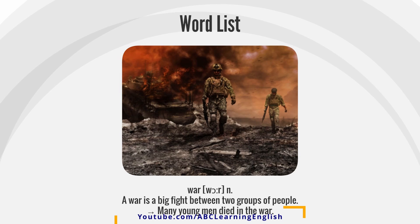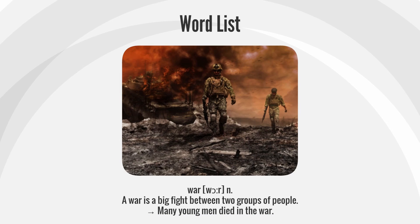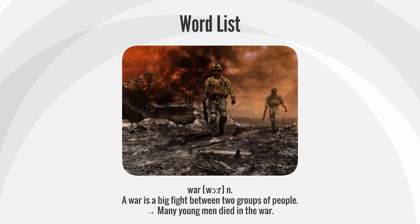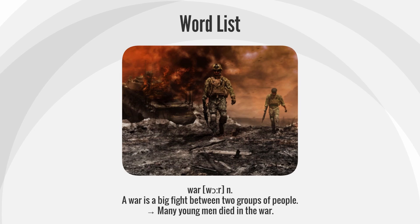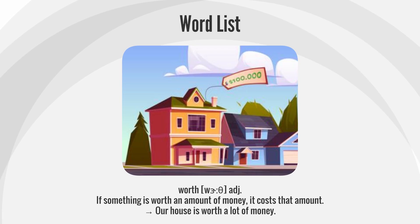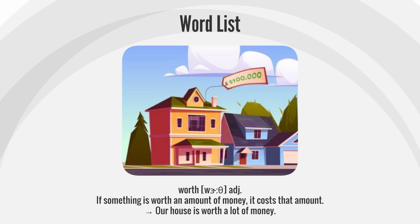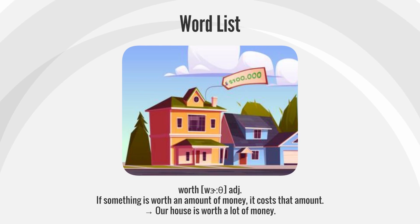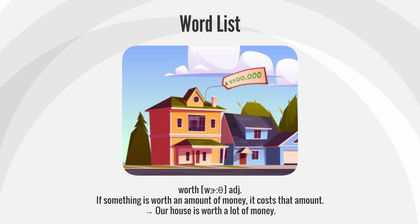War: A war is a big fight between two groups of people. Many young men died in the war. Worth: If something is worth an amount of money, it costs that amount. Our house is worth a lot of money.